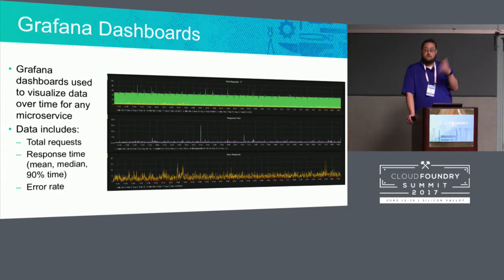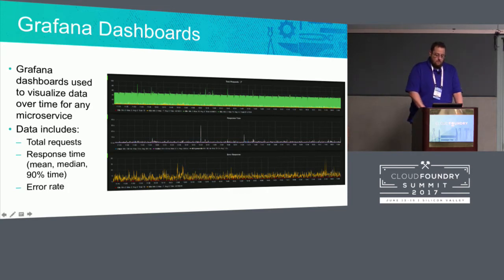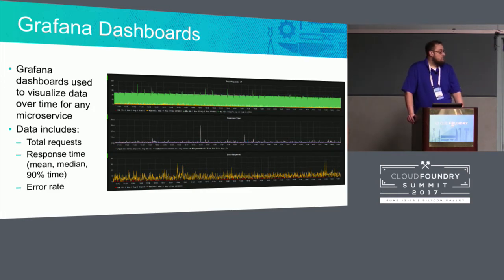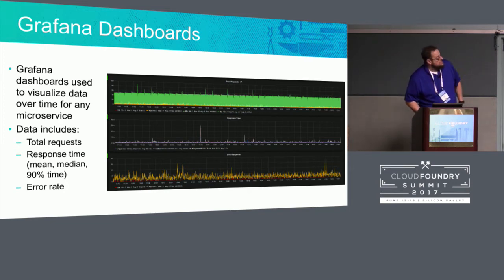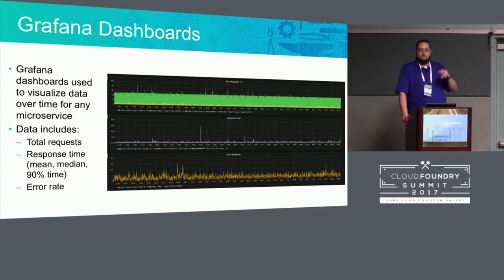So we're putting all this data into InfluxDB and we've connected Grafana to it so we can look at it. Grafana is an open source tool that allows you to create custom dashboards to pull data from various data sources. We have a lot of dashboards like the one shown here. This happens to be real data from our proxy microservice over about a 12-hour period. It includes things like total requests — the top chart, where all the green represents good requests. It's color-coded, so you might see a little yellow and potentially red if we get 400 or 500 responses, but most of it's green, so that's good.